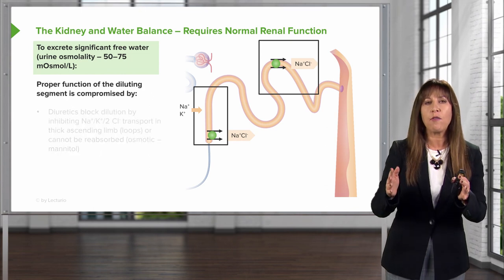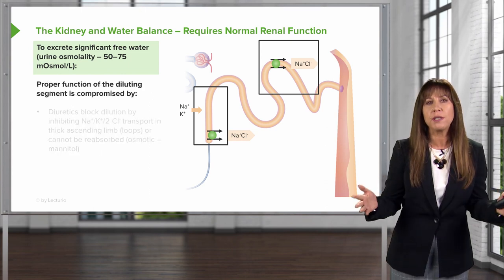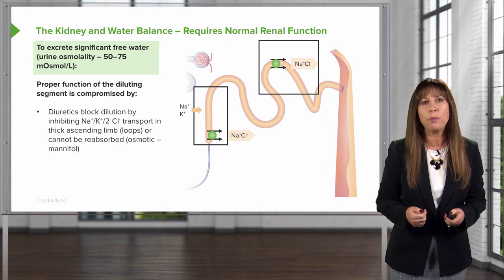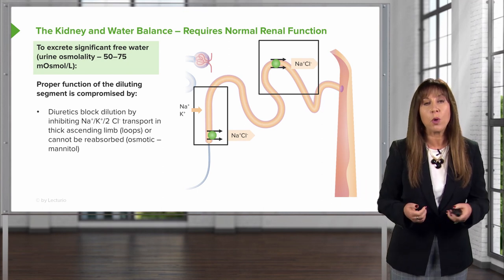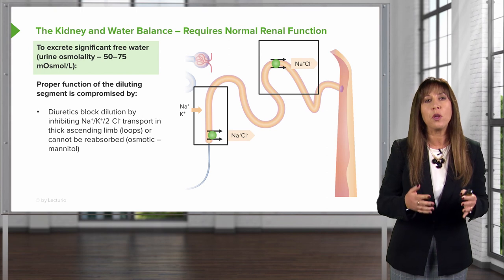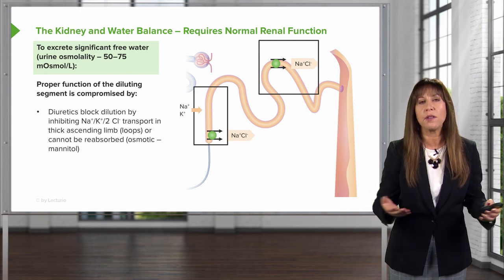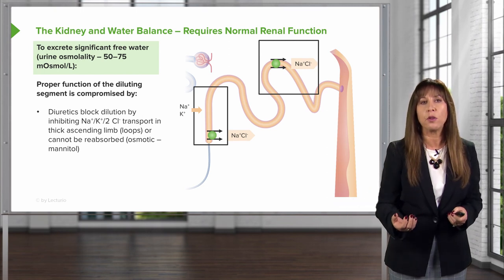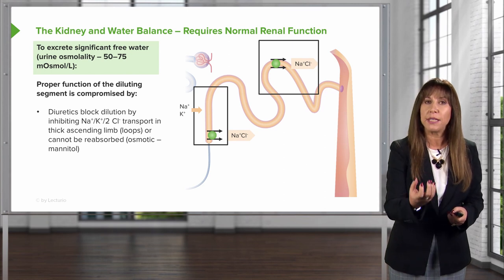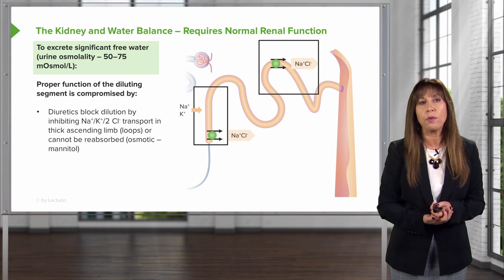We also have to have proper functioning of the diluting segments. This can be compromised in people taking diuretics. Things that block the sodium-potassium-2-chloride co-transporter, like loop diuretics in the thick ascending limb of the loop of Henle, can really impair our ability to get our urine as dilute as possible to excrete that free water load.